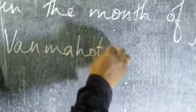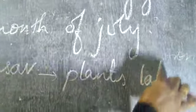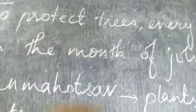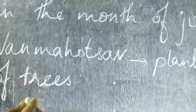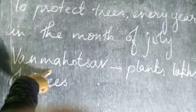To protect trees, every year in the month of July, one Van Mahotsav is celebrated where lots of trees are planted to protect the environment. When Van Mahotsav is celebrated every July, more trees grow and our entire universe will be protected and free of pollution. I hope you understood, children. Thank you.